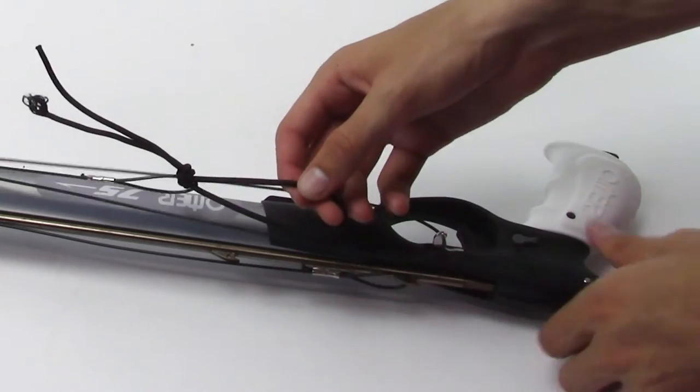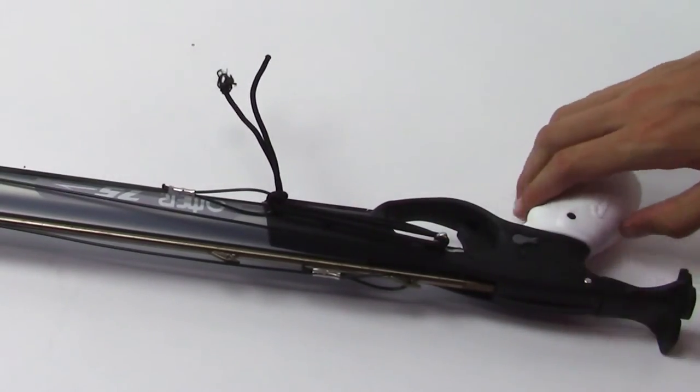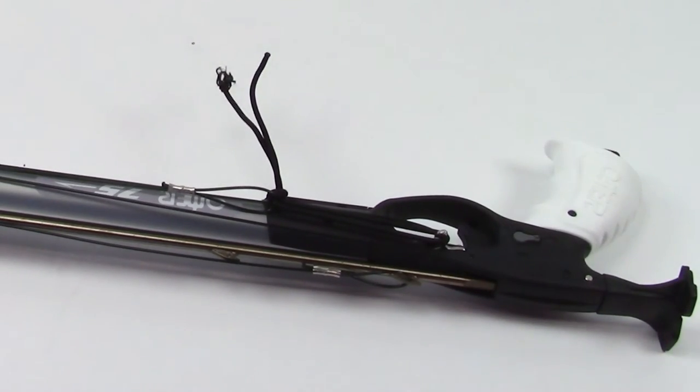Pull the loop snug and check to make sure that the cord will stretch over the line release and hold tension on the shooting line.